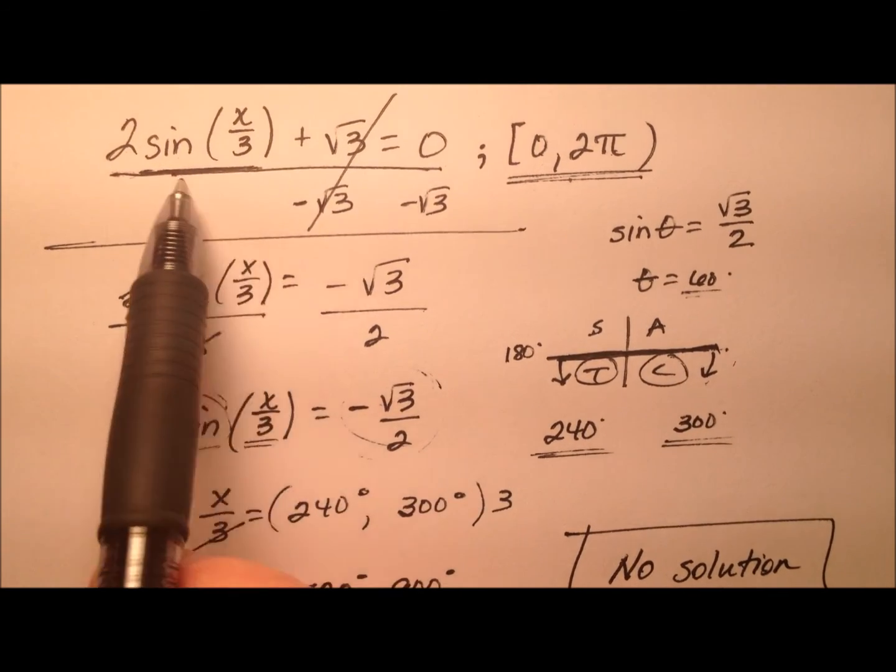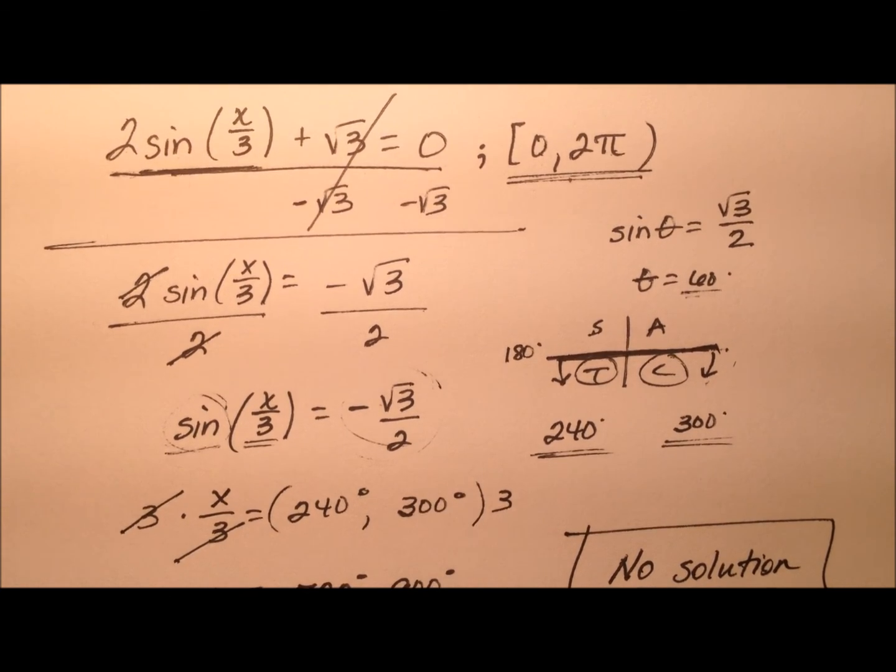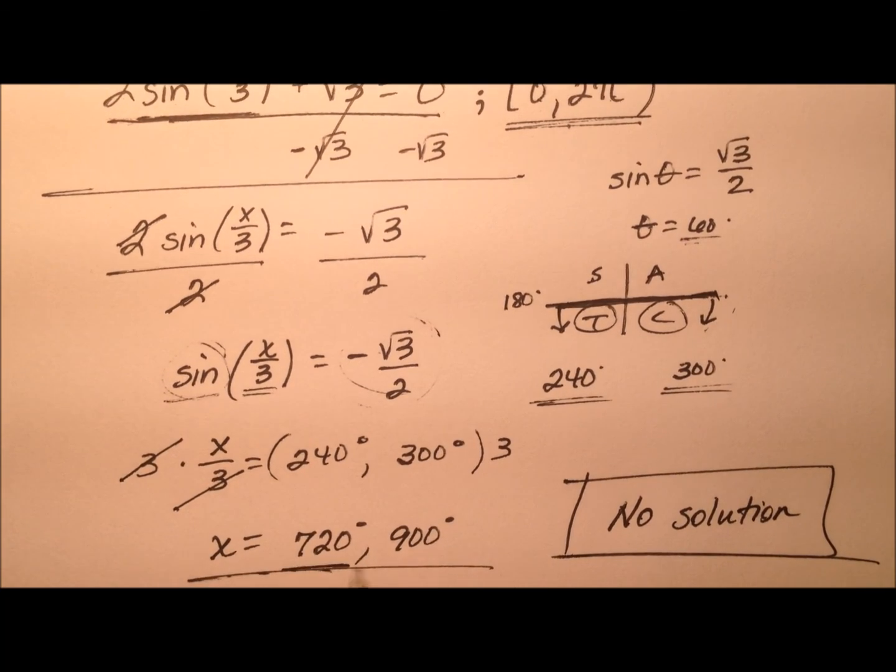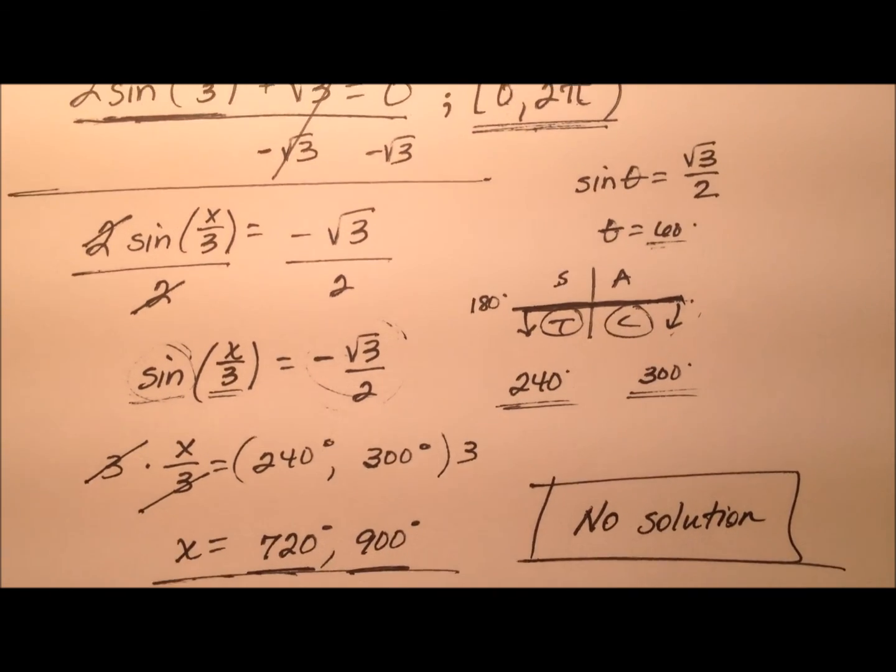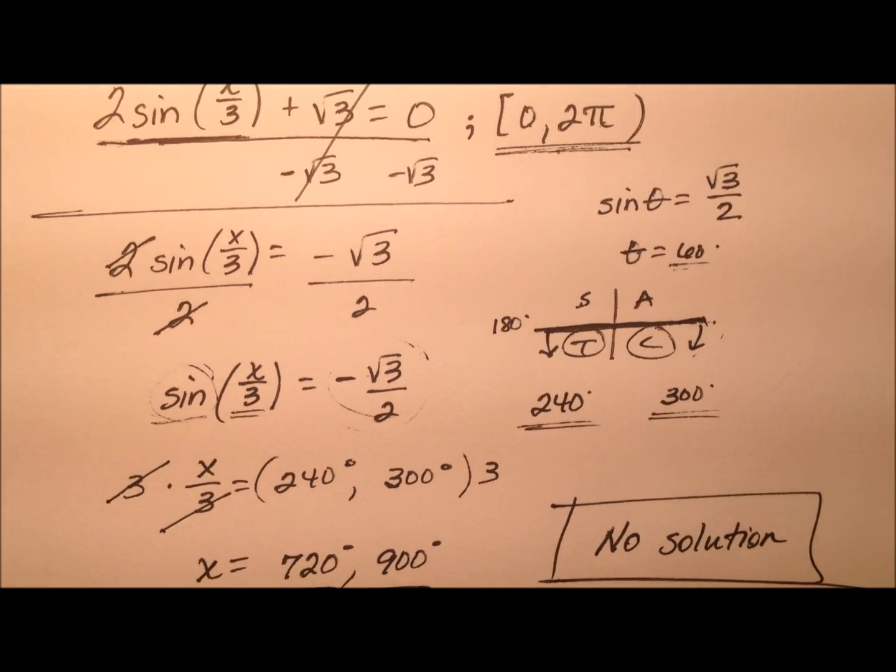So we went through, we solved the equation. We found that all the possibilities, these two right here, were well outside of our interval here. And so we see no solution in this example.